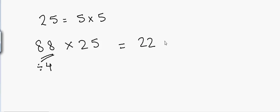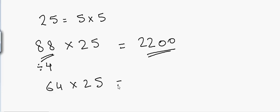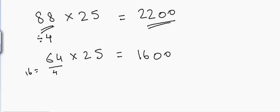Another example: if I have to multiply 64 by 25, that will be 64 divided by 4, which equals 16, and then append 00 — so the answer is 1600. Now let's look at multiplying any number by 125.